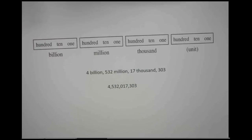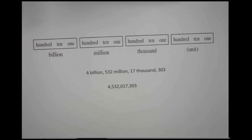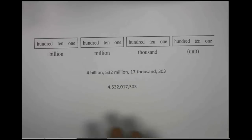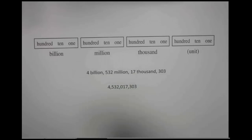Our first objective is to write word names from place value names and place value names from word names. So here on the sheet, we have our base 10 number system, and we have everything done in groups of three.